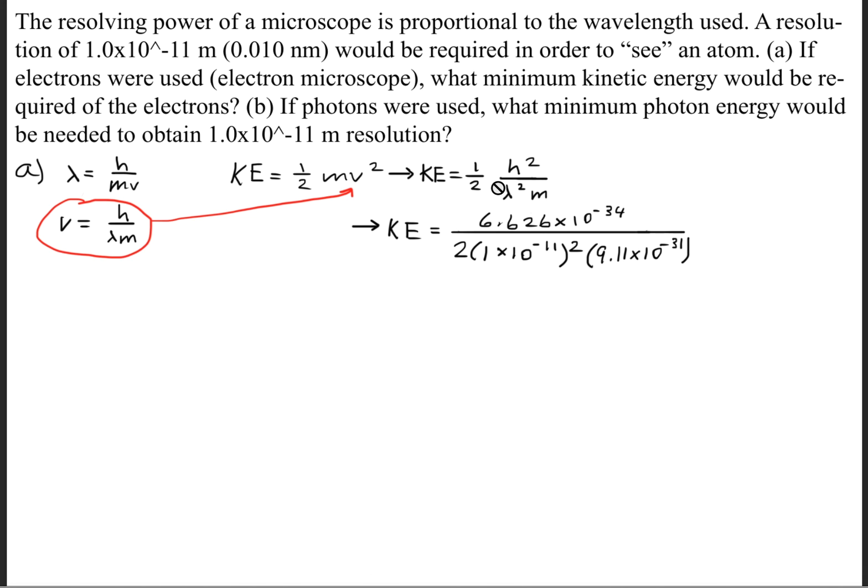This will give us a kinetic energy of 2.41 times 10 to the negative 15th joules. However, we need to use the units of electron volts, and the conversion factor for that is for every 1 electron volt, there are 1.6 times 10 to the negative 19th joules.